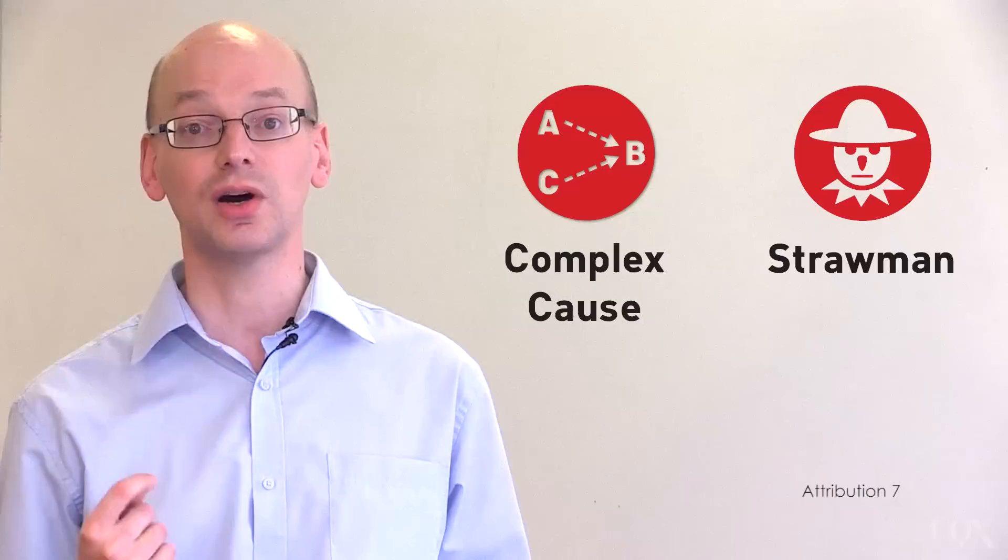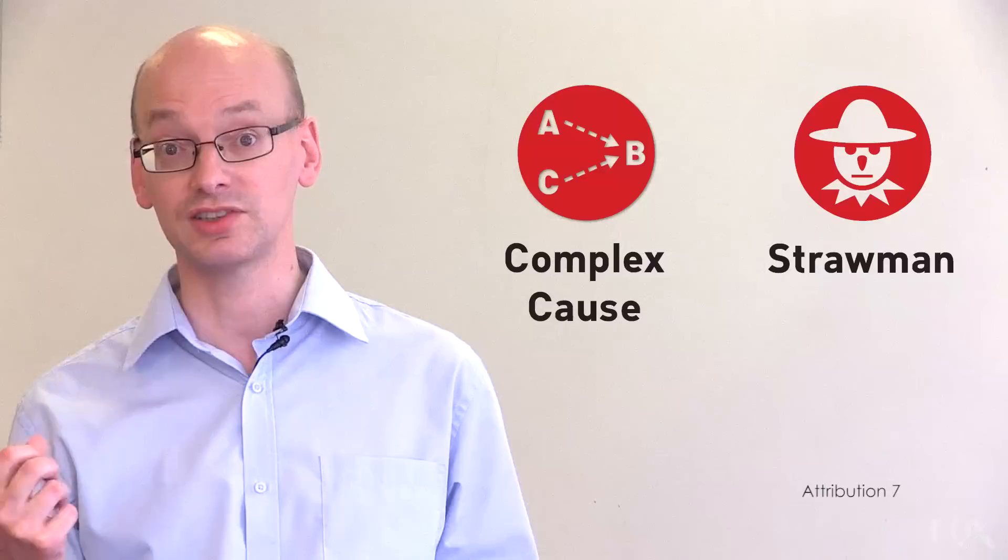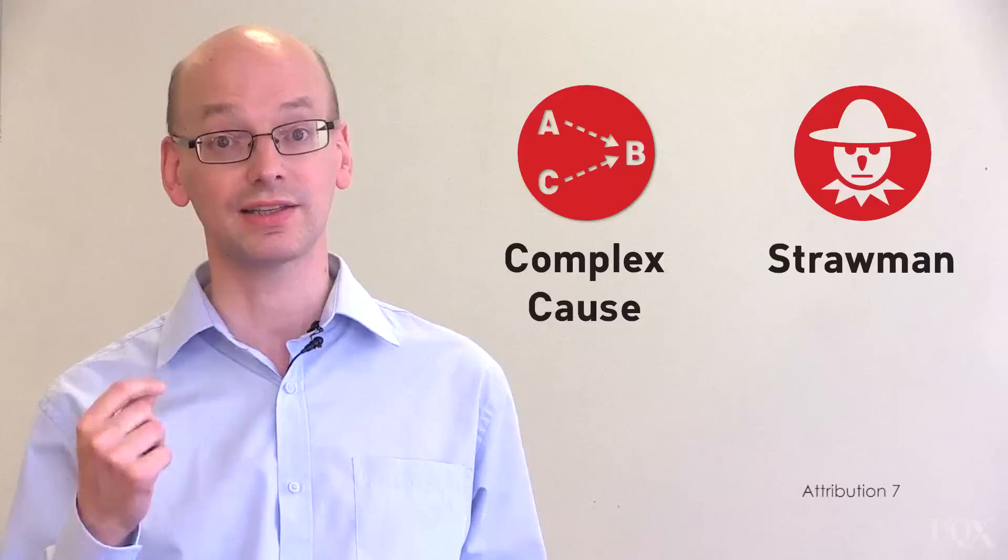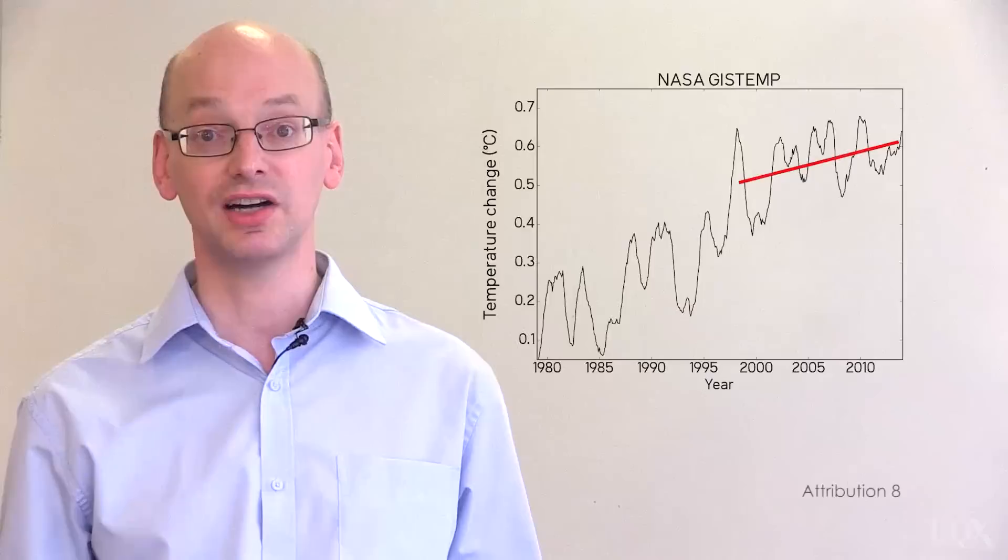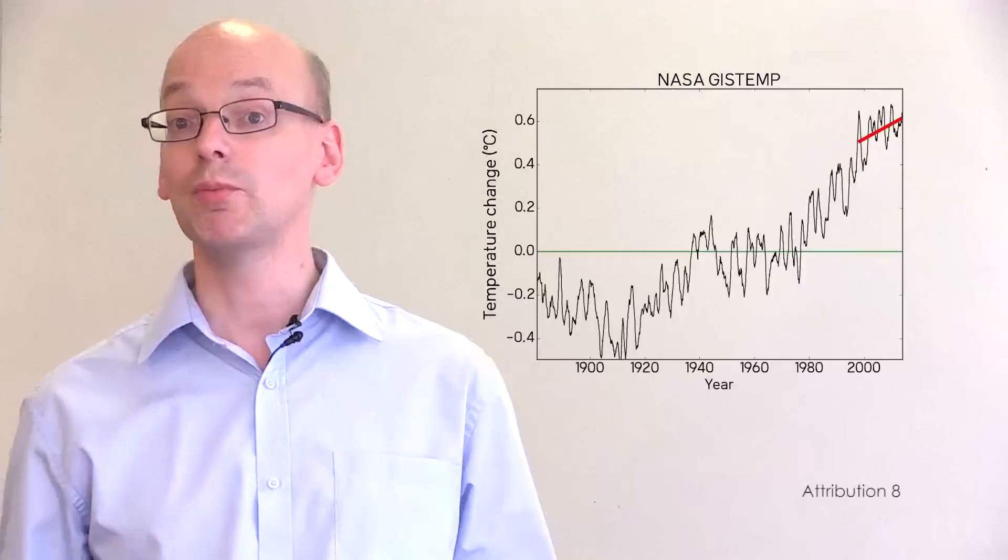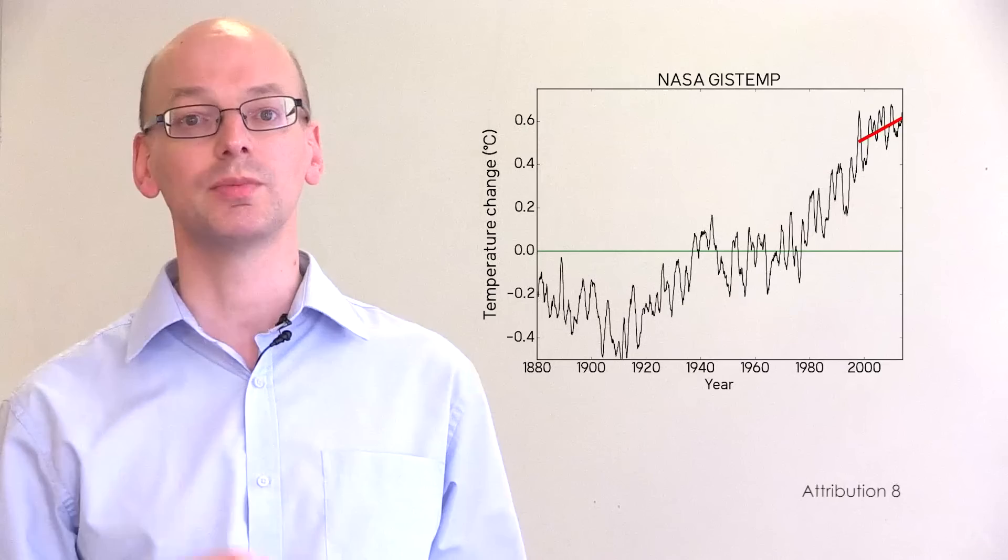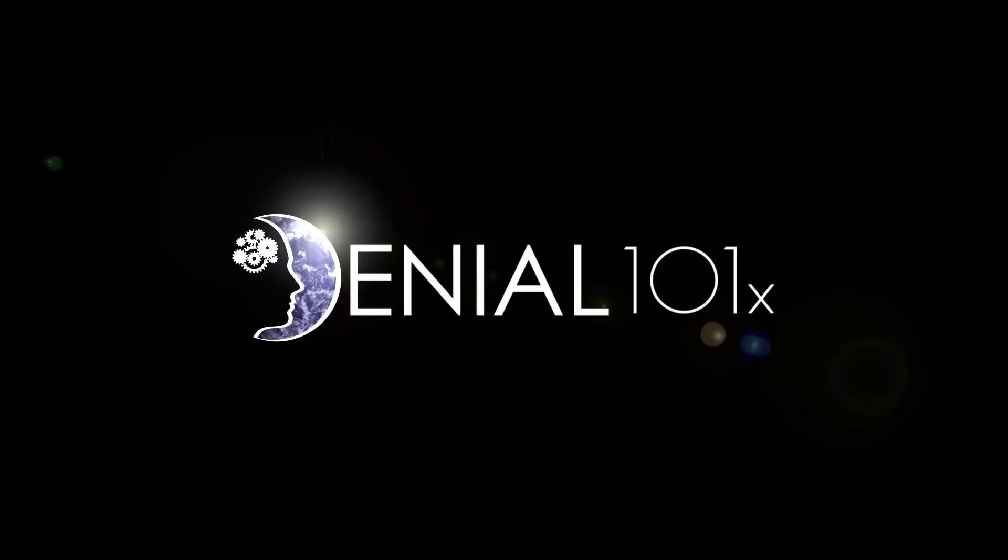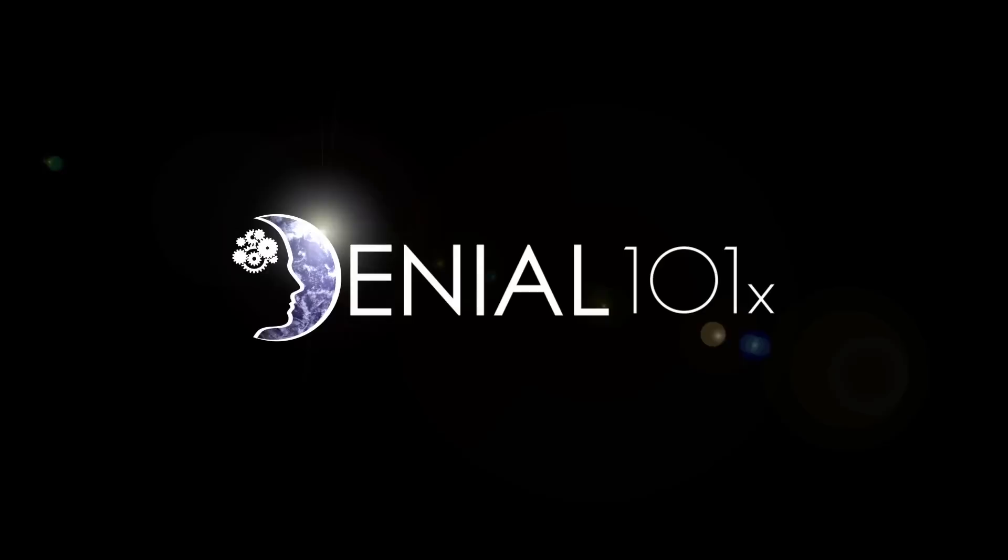This is why the hiatus is so hard to deal with. The myths may be wrong, but they're simple and convincing. The complex cause fallacy exists because people like things to be simple. But explaining the complex drivers of climate is hard. But in the end, all the hiatus myths revolve around drawing attention away from the big picture. When we look at the big picture, the hiatus does not change our understanding of human-caused global warming.